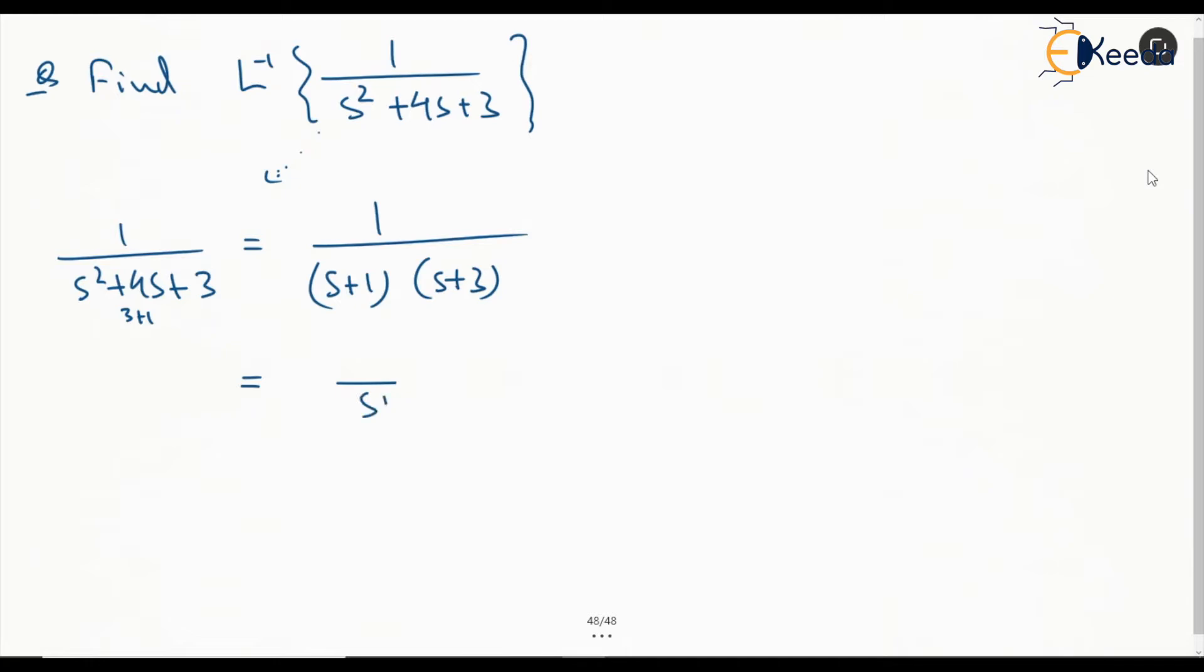Which can be split as s plus 1, s plus 3. The partial fraction, if we put s plus 3 here and s plus 1, will get 2, and then we can divide it by 1 by 2. So this is our f. We can split it and now it will be very easy to find the Laplace inverse of this function.